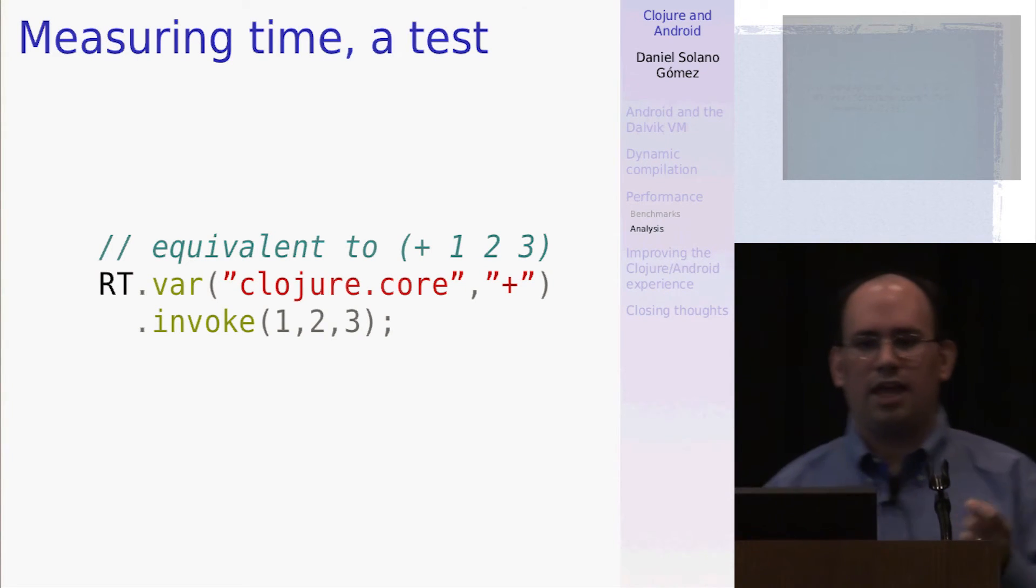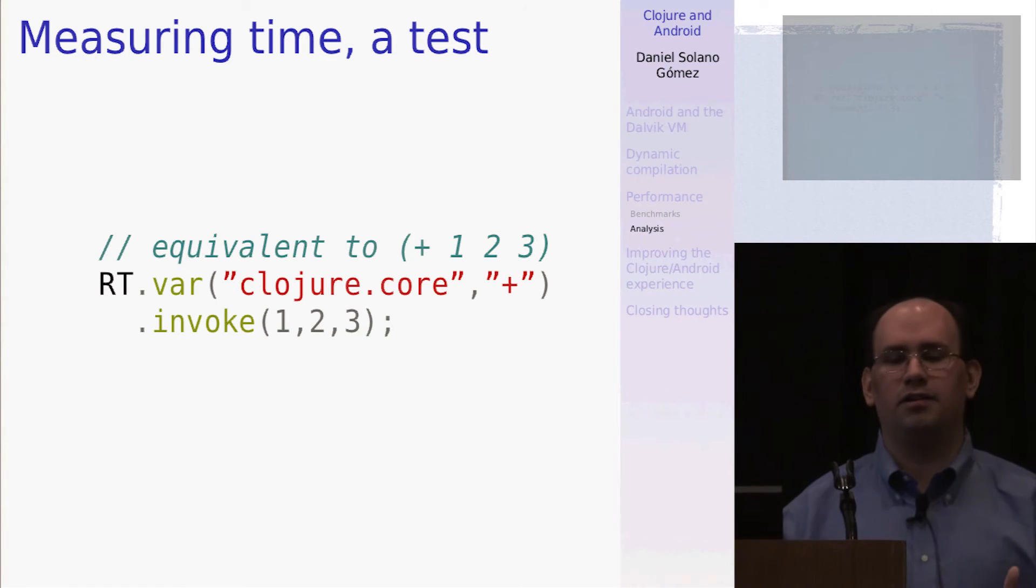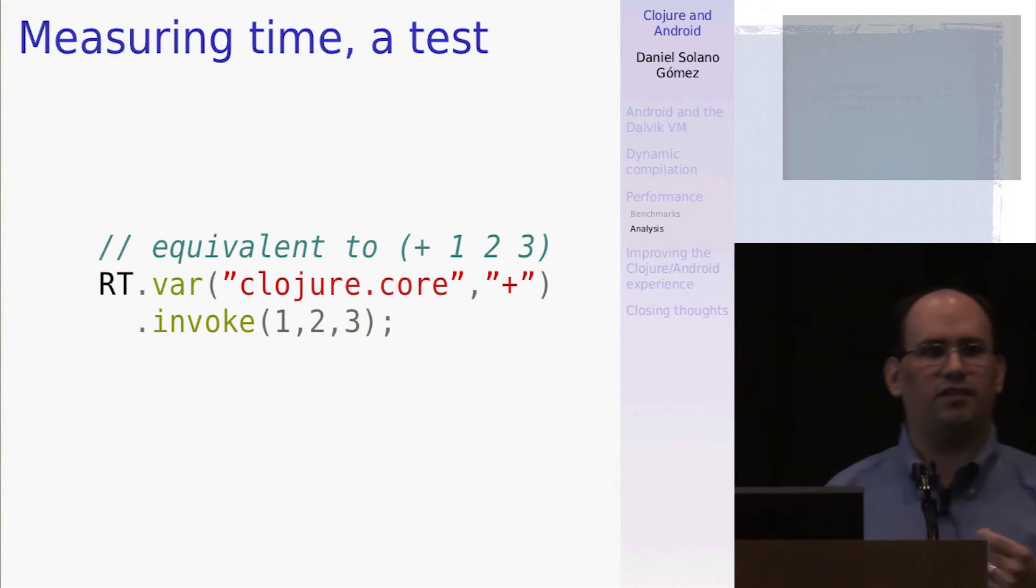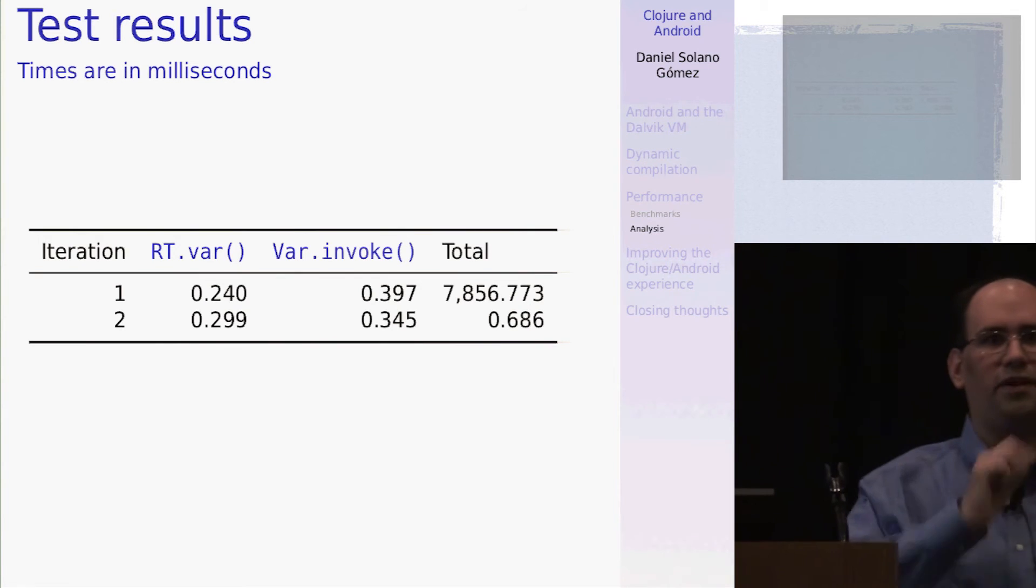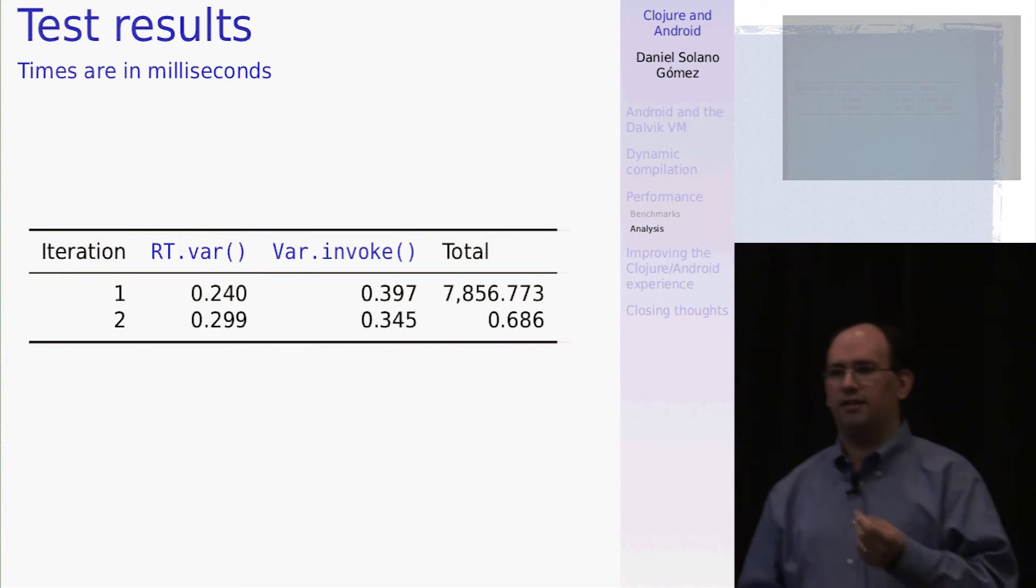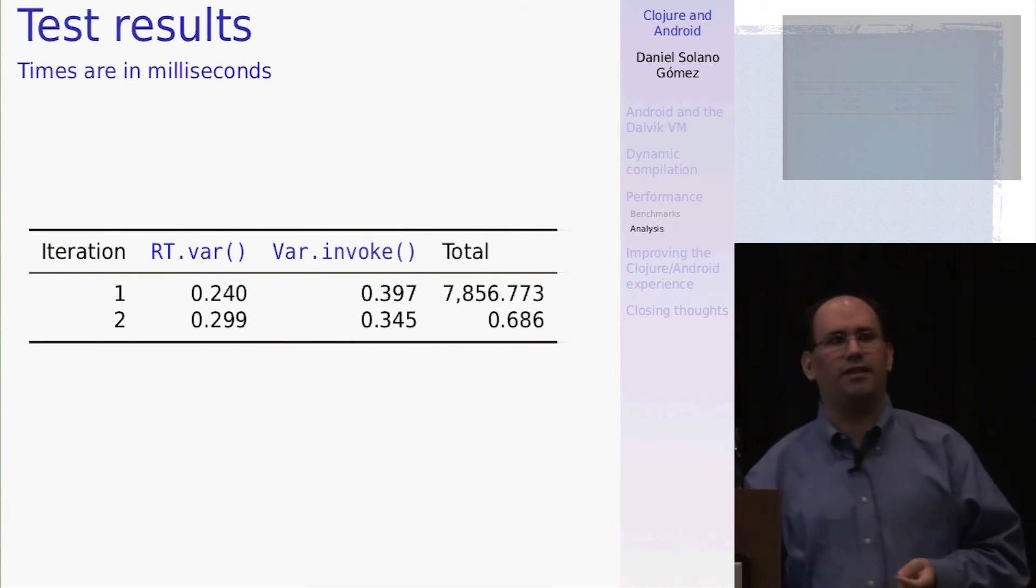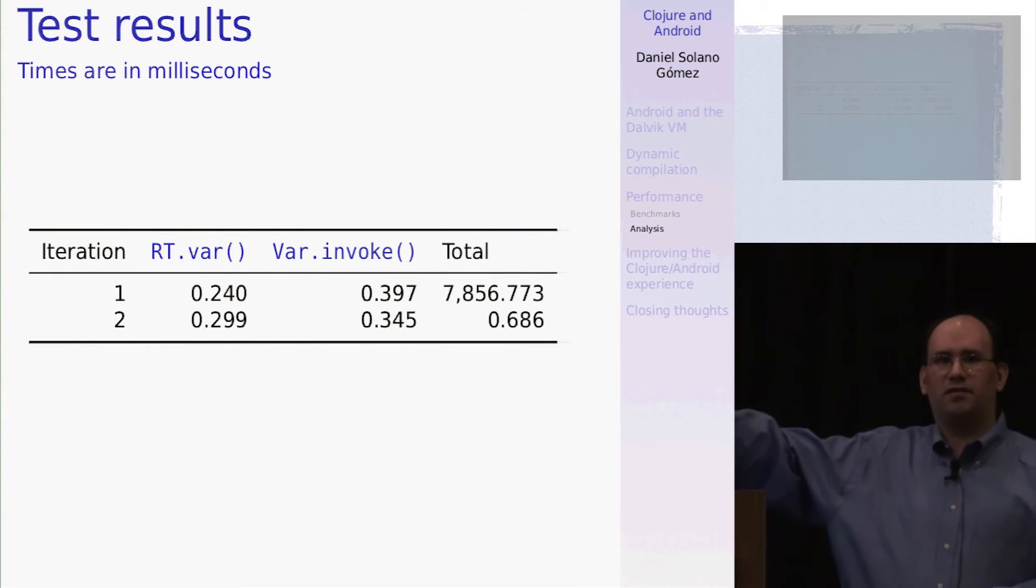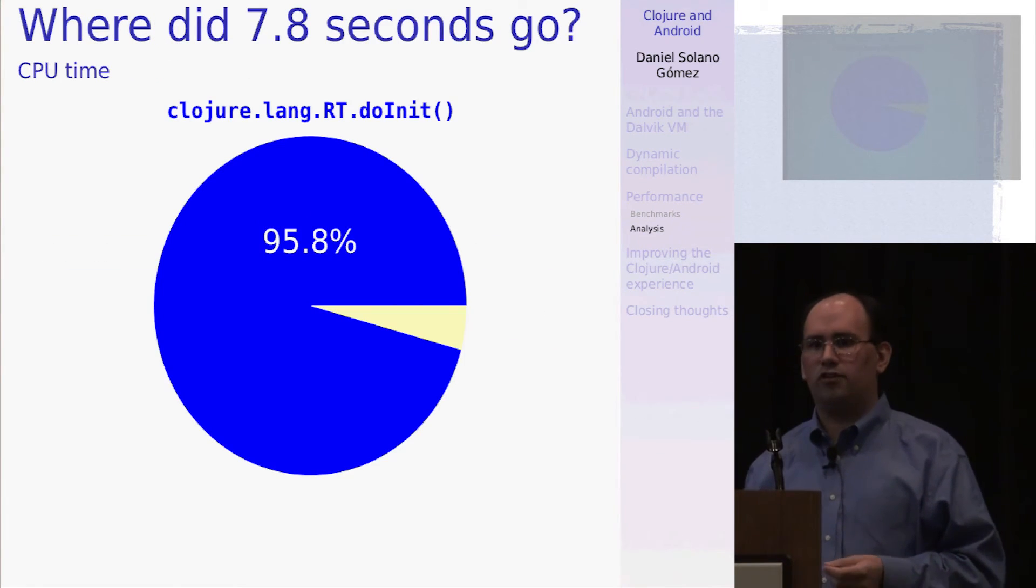So what about time? I created another experiment where I have a Java application that executes this one line of code, which essentially just adds one, two, and three. And so I wanted to see how long does this take? And I ran this within the same application twice. So I had a button that I just pressed it and adds one, two, and three. And what we see here is that the code, the time that it takes to actually execute, dereference, getting the var and invoking it is very, very small, about less than a millisecond. But the first time that you try it, it takes nearly eight seconds. Now, don't pay too much attention on the specific number. This is done using a method profiler, so this is much slower, but the magnitudes are really what's of interest here.